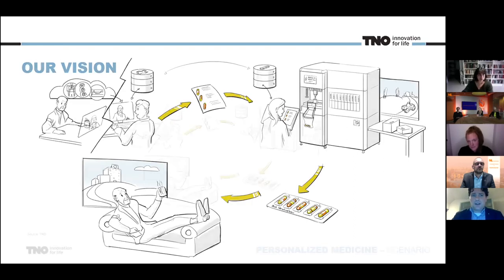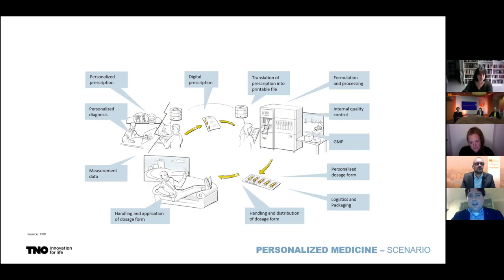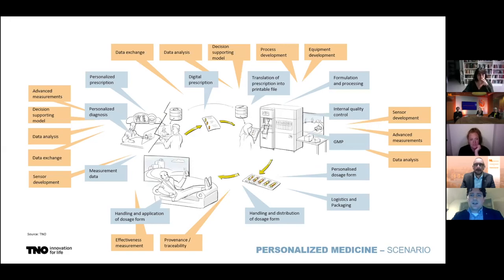But if we look at it from a technology perspective, in order to get to this scenario, a lot of things need to be developed. Personalized data, personalized prescription, how to handle that data properly and safely, how to create that individual data into an individual production process. How do you deal with the material flow required for that? How do you do that safe? How do you deliver it to the person's home? How do you make sure that the patient takes his medication at the right time? And for us, this groups into all kinds of different technologies that need to be developed.